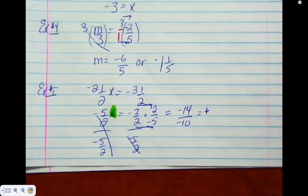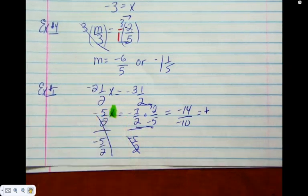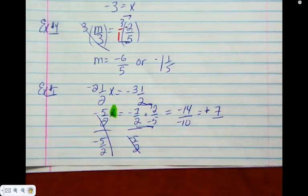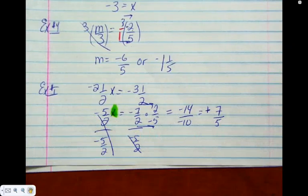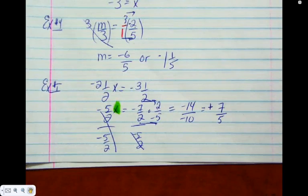And can we reduce 14 on 10? What can we reduce them both by? 2. So 14 divided by 2. And 10 divided by 2, 5. So even though it looks scary with all the numbers, it's just a question from unit 1. We just changed to improper, and then we divided two fractions.